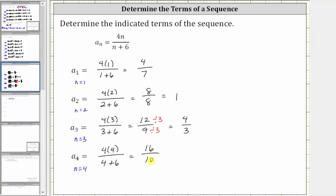a_4 = 16/10, which simplifies because 16 and 10 share a common factor of 2. To simplify, we divide numerator and denominator by 2.